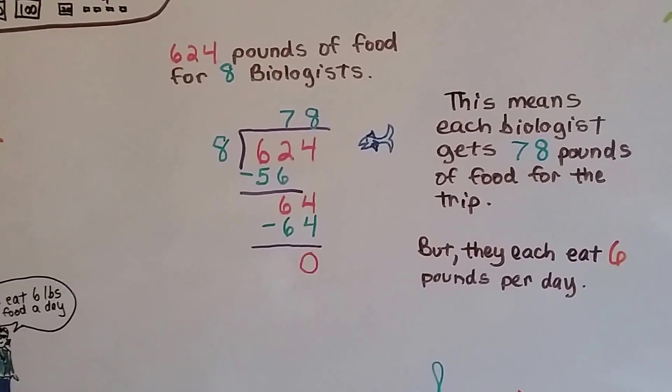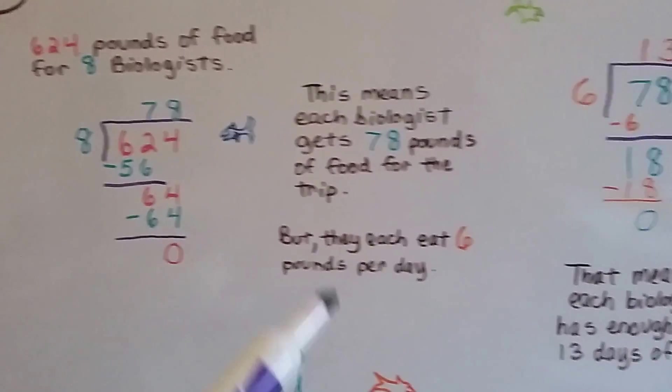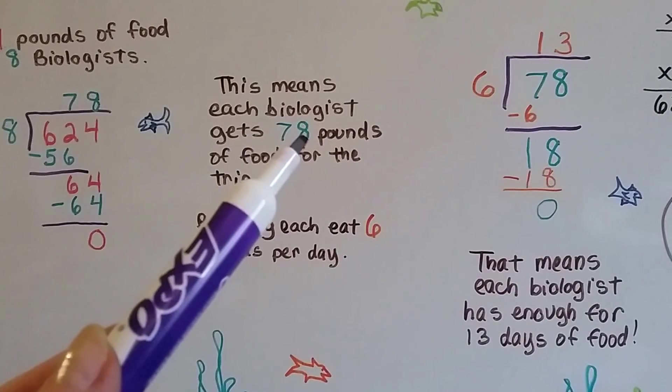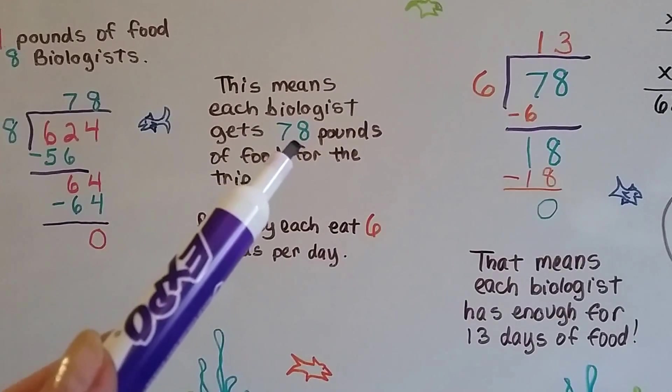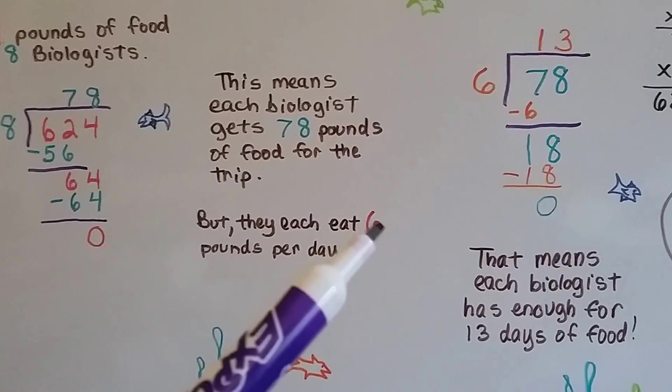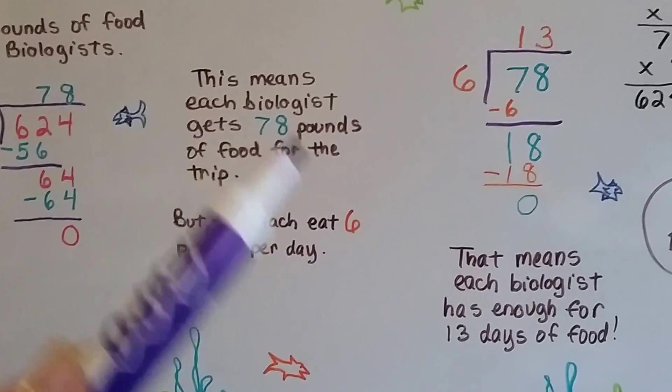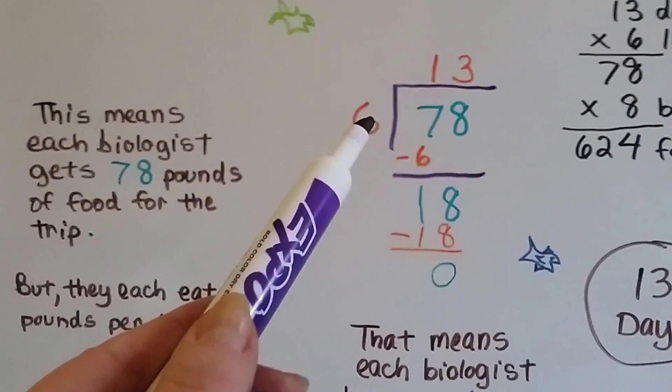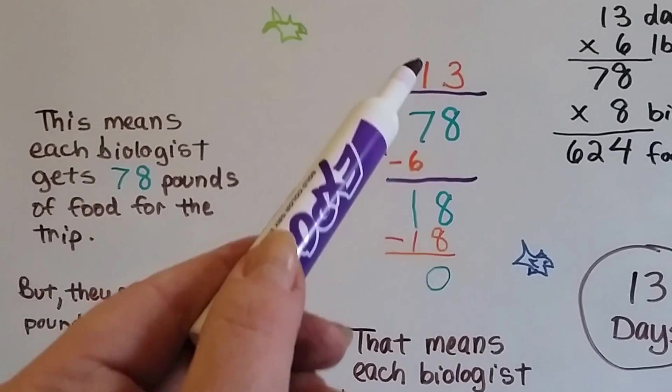But they eat six pounds a day. So we need to split up this 78 pounds that belongs to one biologist into six pound groups, so that she knows how many days she'll be able to be out there. So how many times can six go into seven? One time.